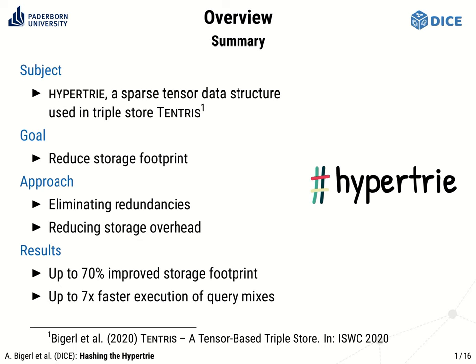As you all know, triple stores are the back-end of the semantic web. In recent years, a few approaches to build efficient triple stores based on tensors were brought up, though they all had some major drawbacks, like not covering all joins. At ISWC 2020 we showed how to overcome these limitations in our paper Tentris – A Tensor-Based Triple Store. Tentris is based on a novel tensor data structure dubbed HyperTrie, and in several query stress tests we showed that it can outperform state-of-the-art triple stores.